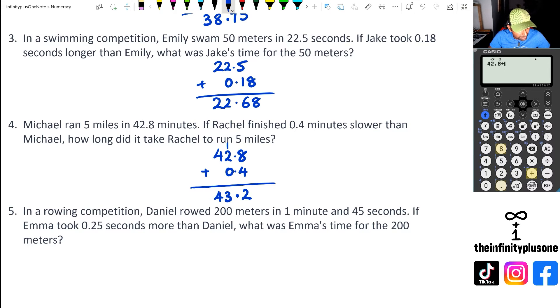Question five, we've got Daniel that rowed 200 meters in 1 minute and 45 seconds. The question says, what was Emma's time for 200 meters? She took 0.25 seconds more than Daniel. Now you wouldn't write 1 minute 45 and then 0.25 seconds, that's not the right way of writing this.